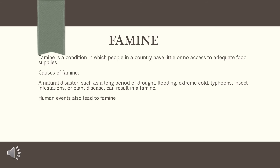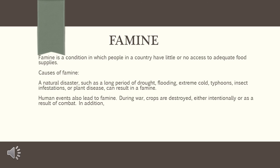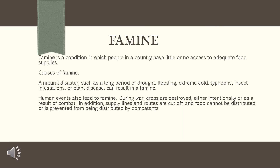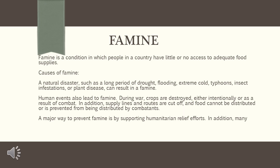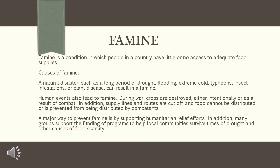Human events also lead to famine. During war, crops are destroyed, either intentionally or as a result of combat. In addition, supply lines and routes are cut off, and food cannot be distributed or is prevented from being distributed by combatants. A major way to prevent famine is by supporting humanitarian relief efforts. In addition, many groups support the funding of programs to help local communities survive times of drought and other causes of food scarcity.